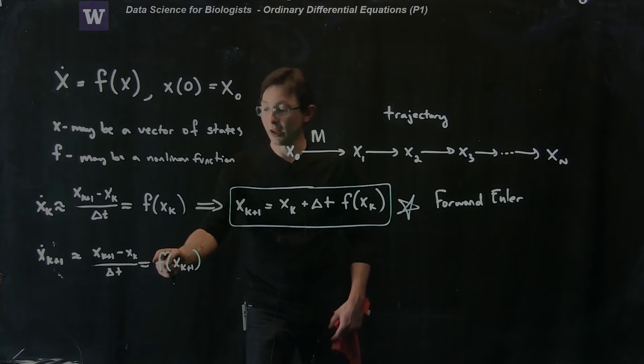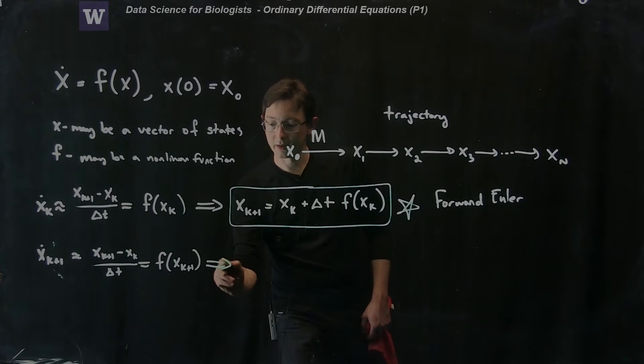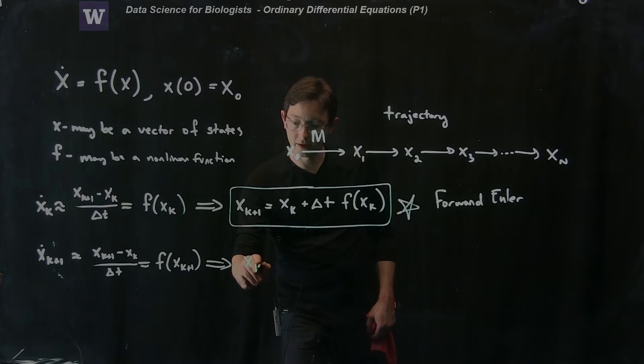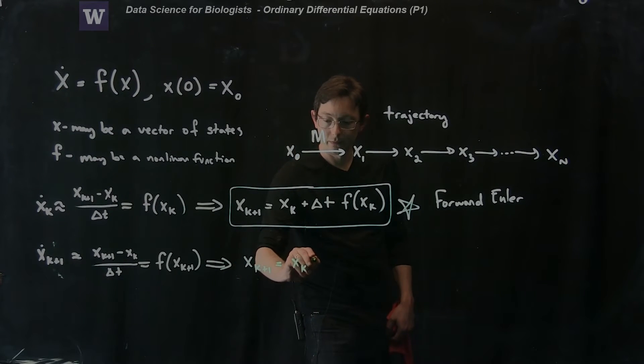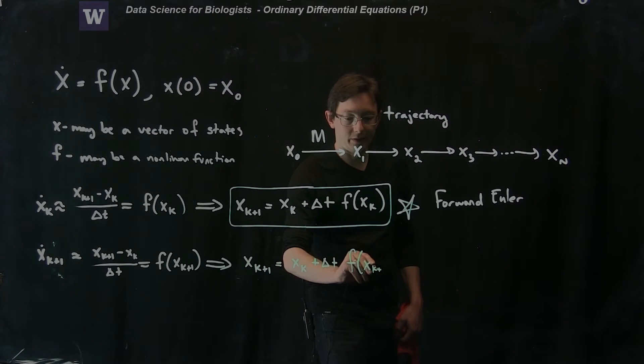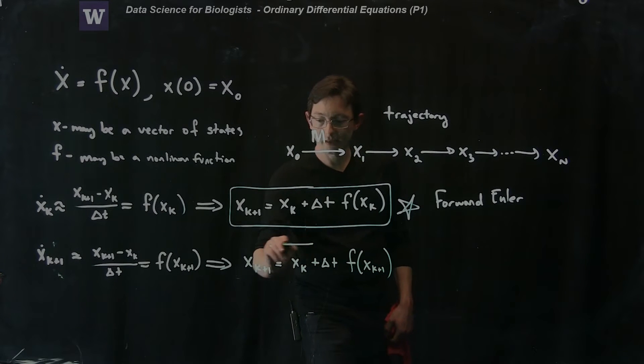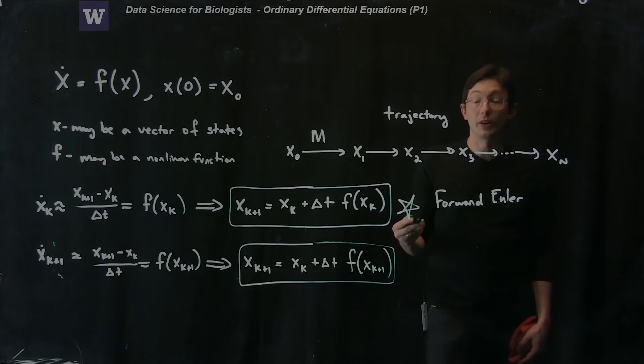And x dot at time k plus 1 should equal f of x at time k plus 1. So again, I'm going to multiply both sides by delta t, add delta x, and I get the following formula: x_k plus 1 equals x_k plus delta t, but now I have an f of x_k plus 1. So this is another iteration. This is called backward or implicit Euler.